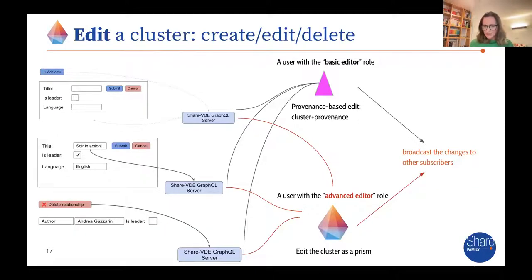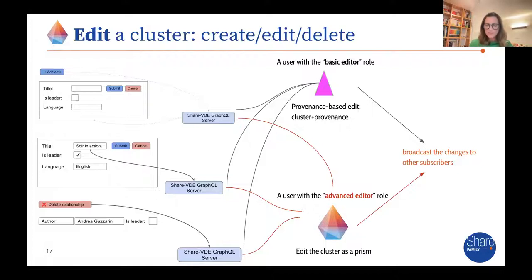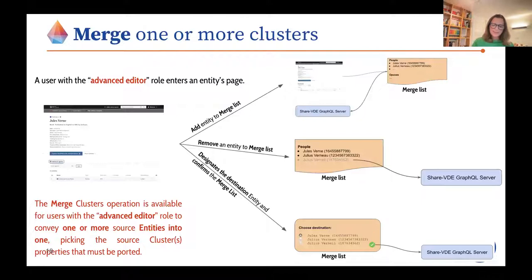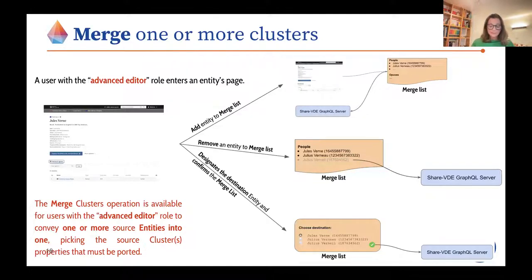If the user is a basic editor, only the properties coming from the user's provenance will be editable. If the user is an advanced editor, the whole prism — meaning all properties — will be editable. When the entity changes due to someone else modifying it, the change is notified to the user's browser as well, and the application updates the related fields. The merge cluster operation is available for users with the advanced editor role to commit one or more source entities into one, picking the source clusters' properties that must be ported. The user picks two or more clusters to merge, then designates the destination one, then chooses which property to copy to the destination entity.